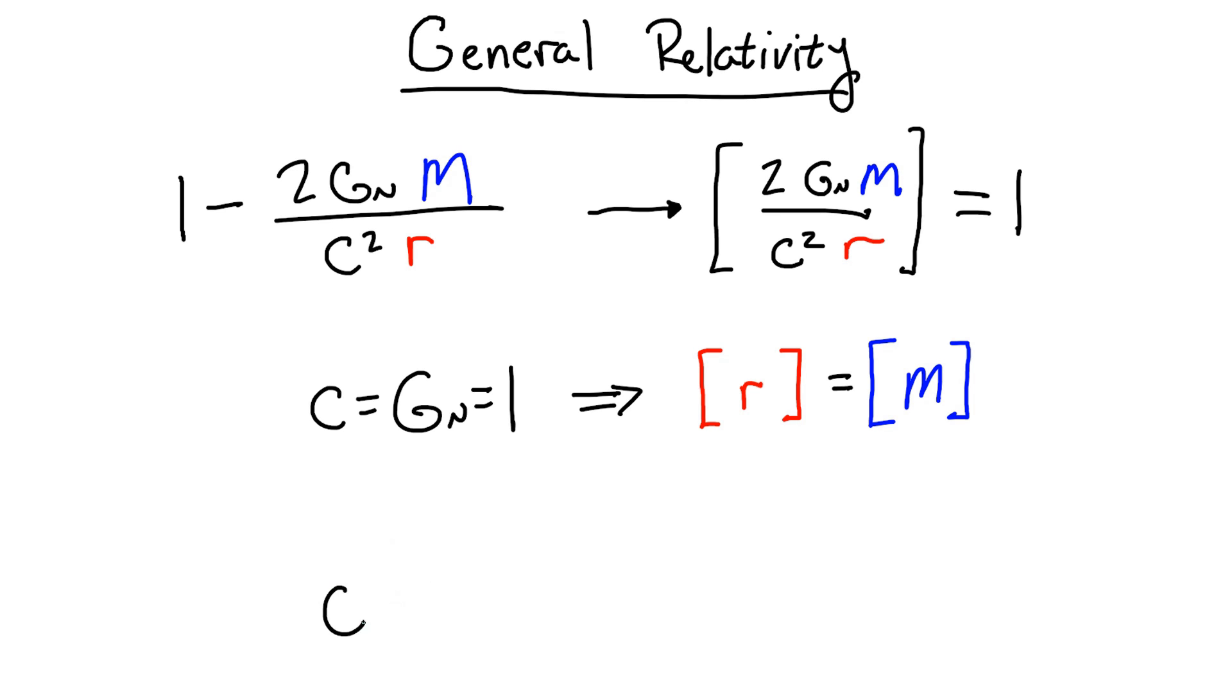But this contradicts what we found in quantum field theory, where mass and distance have to have inverse dimensions. This is fine as long as the two theories stay separate, but when we try to get the two to play nice together, we have to circumvent this issue.